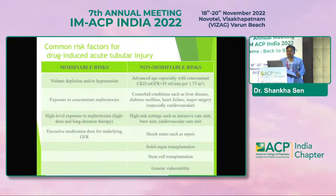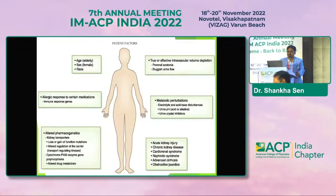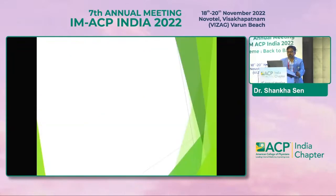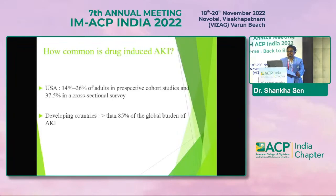There are modifiable risk factors like volume depletion, hypotension, exposure to concomitant nephrotoxins, high-level nephrotoxin exposure, and excessive medication dosing for underlying GFR. Non-modifiable risks include advanced age, comorbid conditions, high-risk settings like ICU and burn units, shock states, stem cell transplantations, and genetic vulnerability. In the USA, drug-induced AKI accounts for 14–26% of adults in prospective cohort studies and 37.5% in cross-sectional studies. In developing countries, more than 85% of the global burden of AKI is drug-induced.